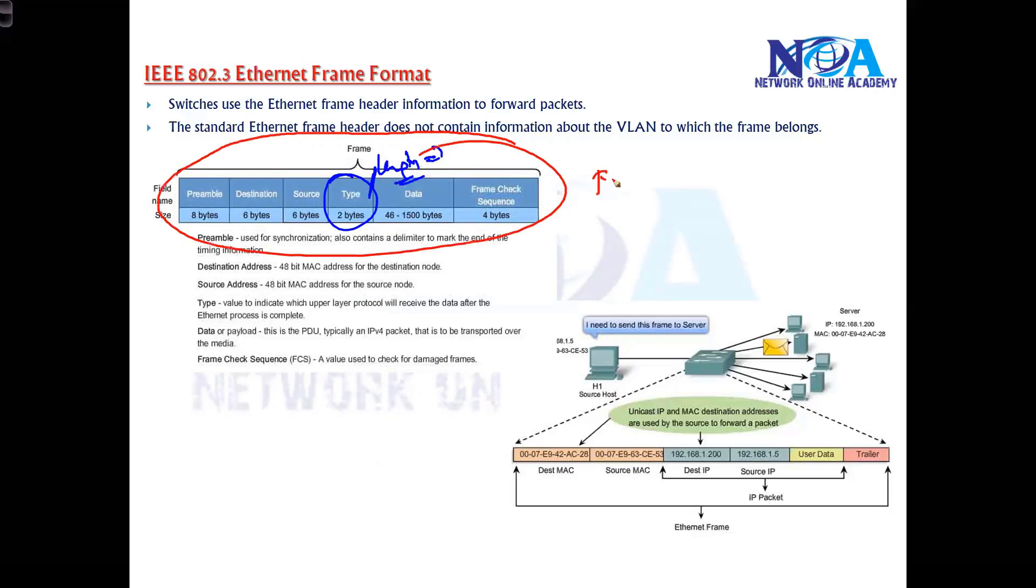Typically the frame size or the packet size or the ethernet frame size will be minimum 64 to 1500 bytes generally. Maximum size of the frame can be minimum from 64 to 1522 or 1500 bytes. If you add some additional information it can be up to 1522 bytes.